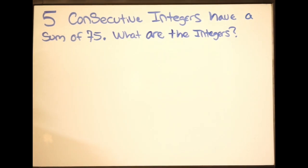So in this example, we're being told that we have five consecutive integers that have a sum of 75, and they want to know what are the integers. So our first step here is to create an equation that we can solve in order to get our five consecutive integers.